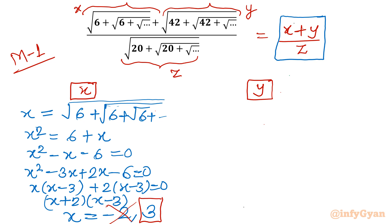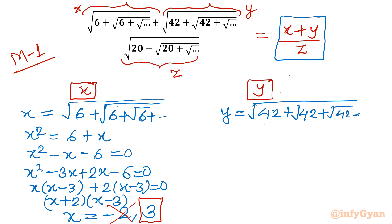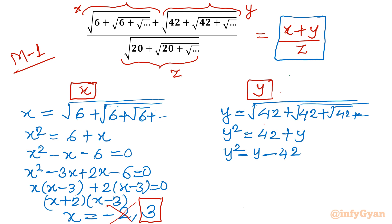Now let us consider y. y is square root of 42 plus square root of 42 plus square root of 42 and so on. Squaring both sides gives y squared equals 42 plus y. Taking all terms to one side: y squared minus y minus 42 equals 0. Since 7 times 6 equals 42, I split the middle term as minus 7y plus 6y, whose sum is minus y and product is minus 42y squared.